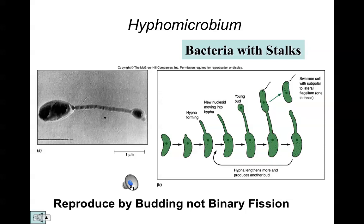Hyphomicrobium is another example of an unusual type of bacteria that doesn't have a traditional geometric shape and doesn't reproduce by the traditional method we call binary fission. If we take a look at Hyphomicrobium, we have a pillow-shaped or rod-shaped bacteria that produces a long stalk-like extension and then a young bud — an identical copy of the original prokaryotic cell — as a reproductive structure. Very unusual.